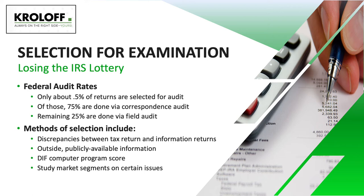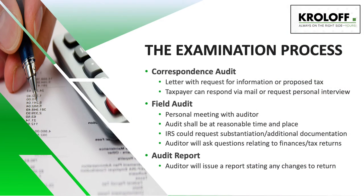Income tax returns are given a computer score based on the information provided. The higher the score of the return, the more likely it is that the return will be selected for audit. Sometimes, if the IRS is looking to examine a certain issue that is common to many returns that year, they will select a sampling of such returns in an effort to understand how to better handle those certain issues. In a correspondence audit, the IRS will generally ask for more specific documentation related to a certain issue or item on the return, and may include information as to the amount and reason they believe the taxpayer owes additional tax, penalties, or interest. The taxpayer is given an opportunity to prove that the return is correct as filed. Most taxpayers choose to handle these types of audits via mail, although they do have the right to request a personal interview with a local examiner.